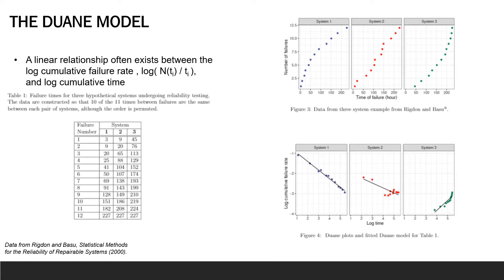One of the two most common classes of reliability growth models used by the DoD for continuous data are models using the non-homogeneous Poisson process. These models focus primarily on system-level failures. The models were developed using intuition from the more deterministic Duane model. The Duane model was developed by observing empirically that a linear relationship often exists between the log cumulative failure rate, which we denote as log of n(t_i)/t_i, and log cumulative time.